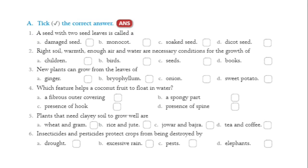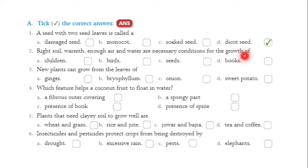Now let us solve the exercise. First question: a seed with two seed leaves is called — damaged seed, monocot seed, soaked seed, or dicot seed? The correct answer is dicot seed. Next question: soil, warmth, enough air, and water are necessary conditions for the growth of — children, birds, seeds, or books? Seeds is the correct answer.